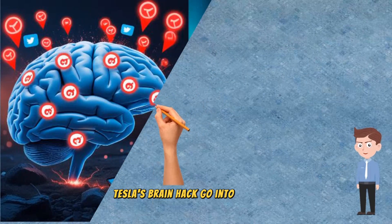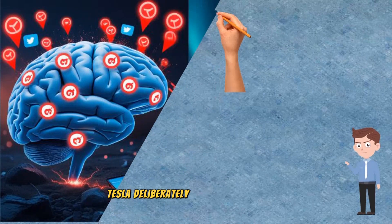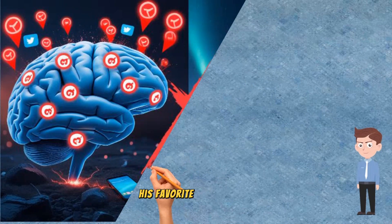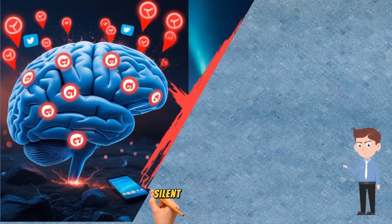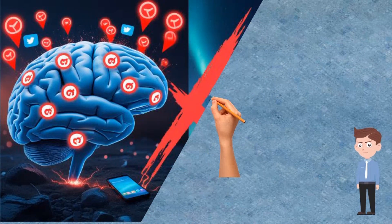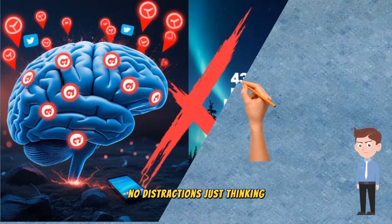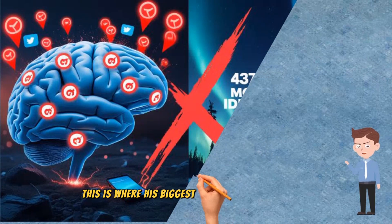Tesla's brain hack. Go into isolation. Tesla deliberately removed distractions to enter deep mental focus. His favorite method? Long, silent walks. Alone. He would disappear for hours. No distractions. Just thinking. This is where his biggest breakthroughs happened.